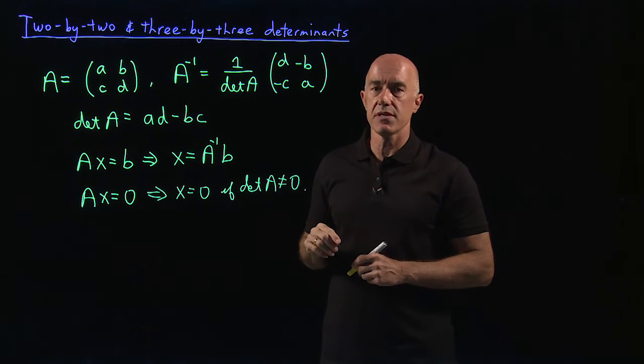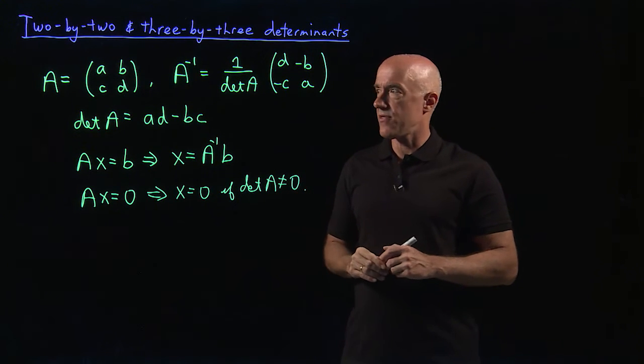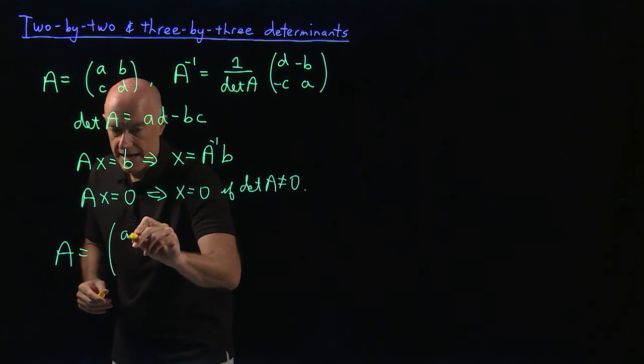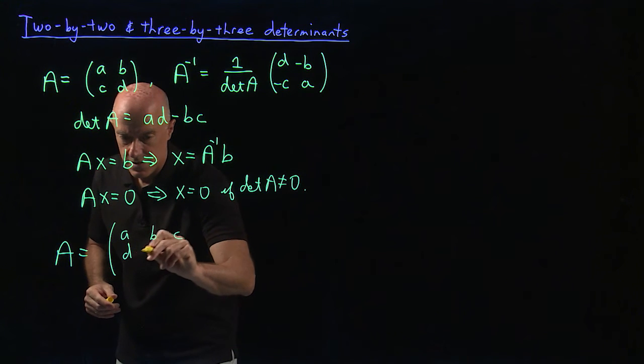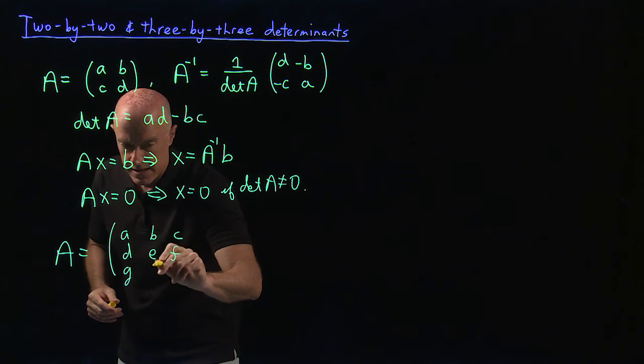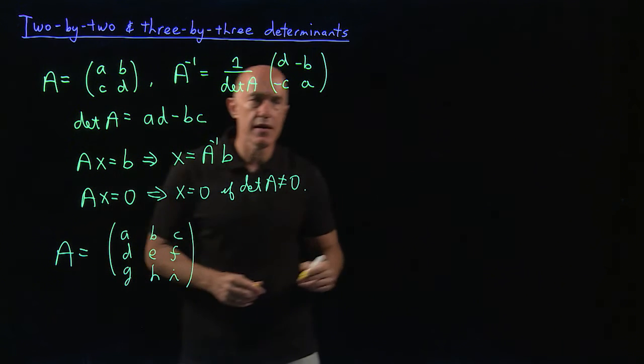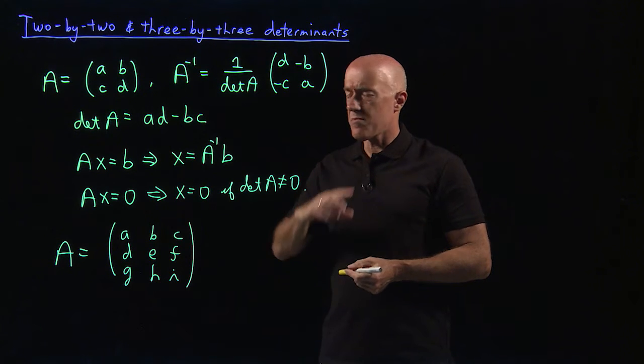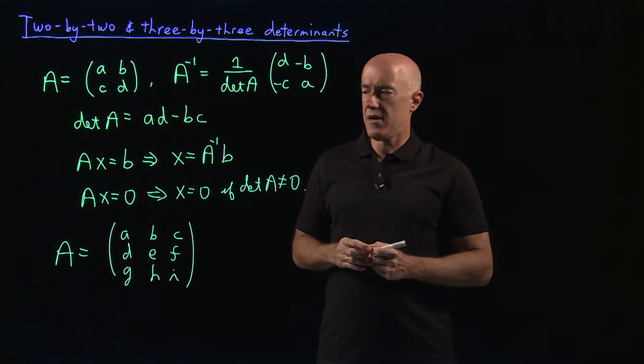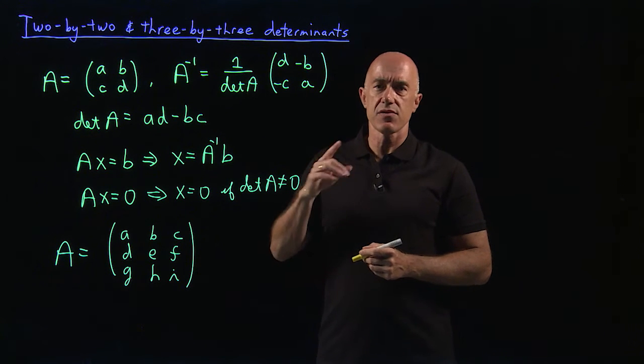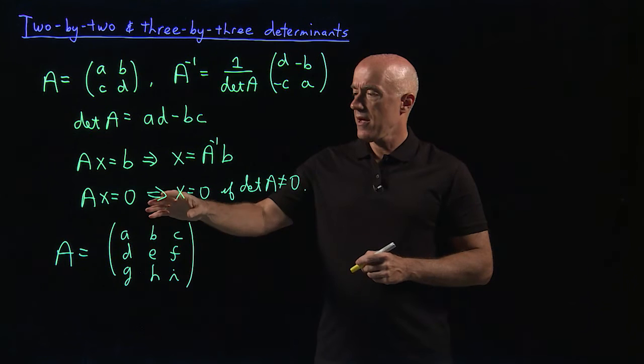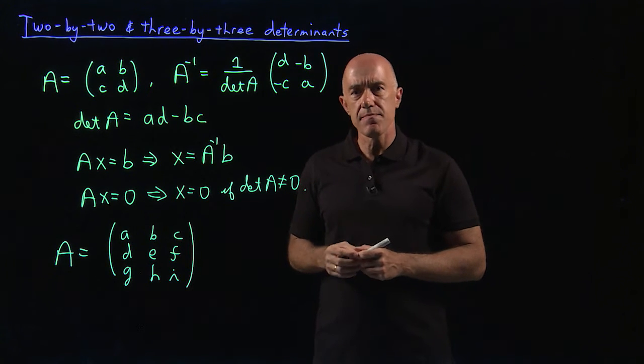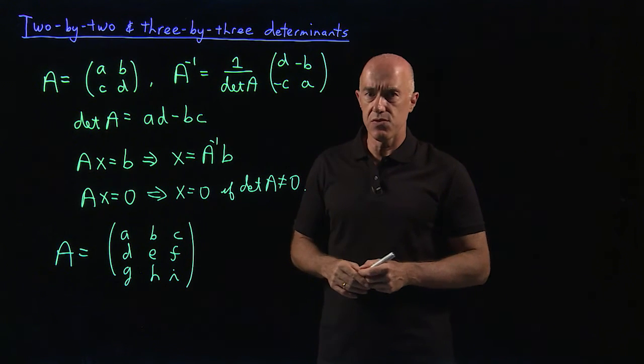So this was the two by two matrix. So you can play this game with a three by three matrix. So here, let's write the three by three matrix, A equals A, B, C, D, E, F, G, H, I. And one can write the equation Ax equals zero and come up with a condition so that only x equals zero is the only solution. That's an exercise in algebra, would fill up half of the light board, but it's absolutely doable.